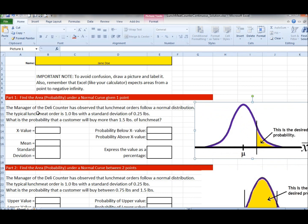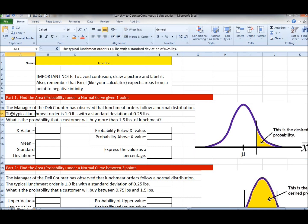It says the manager of a deli counter has observed that lunch meat orders follow a normal distribution. The typical, very key word right there so key that I'm going to highlight it a little bit. The typical lunch meat order is one pound with a standard deviation of 0.25 pounds. What's the probability that a customer will buy more than, also worth marking up, more than 1.5 pounds of lunch meat.